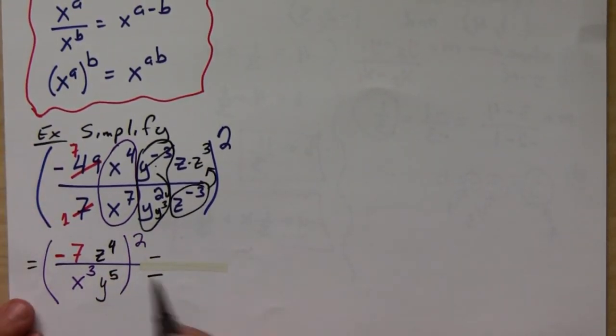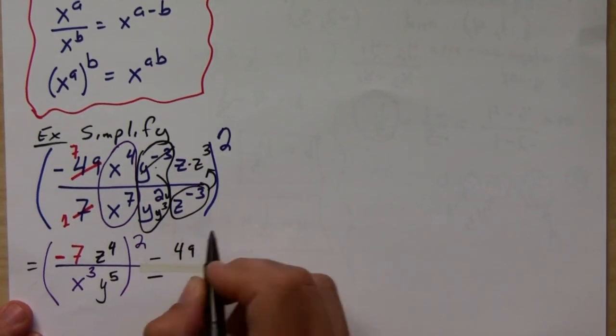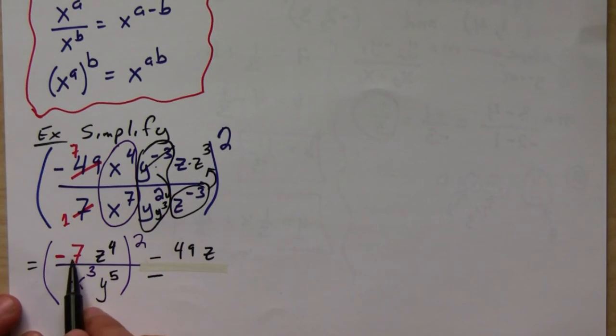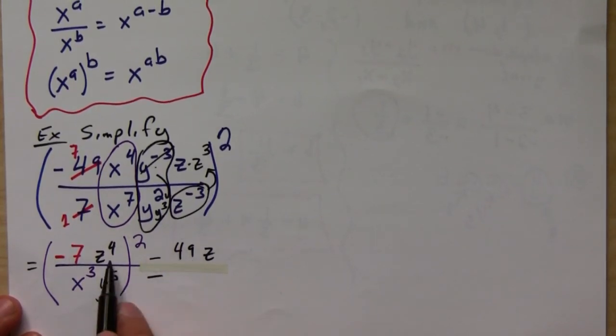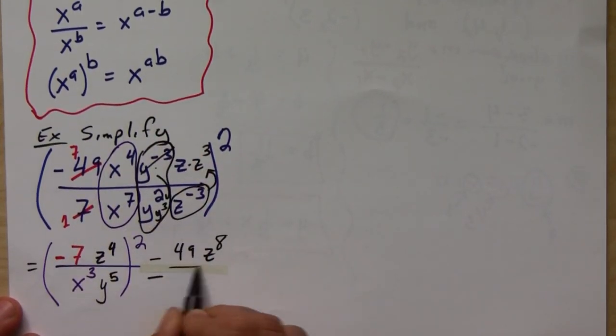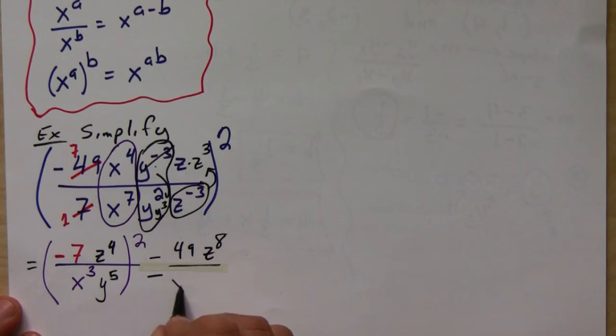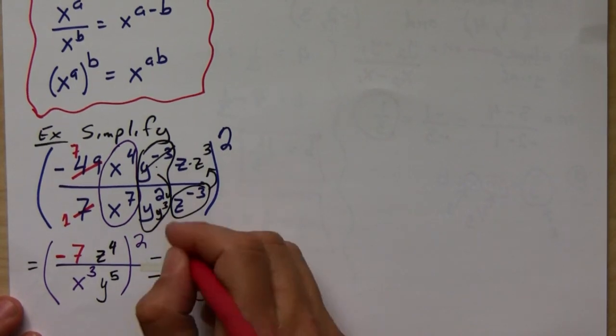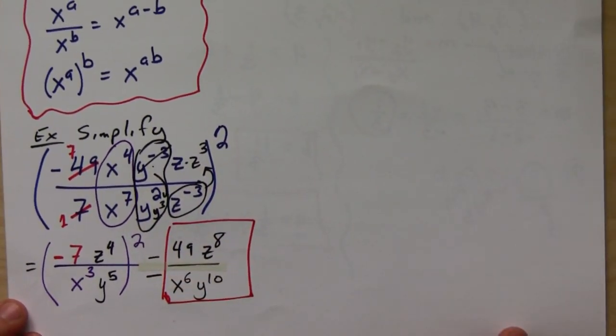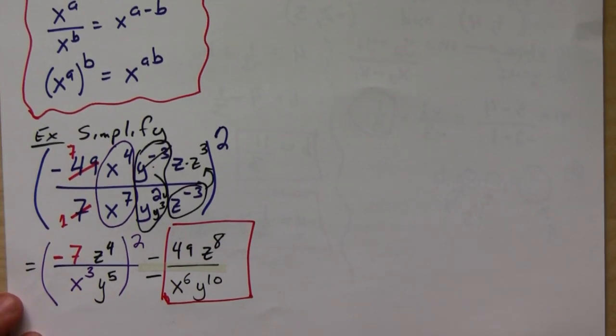So then this is equal to 49 z... so remember when you raise negative seven, we square, we get positive 49. The z to the fourth, remember you multiply the exponent, so we would get z to the eighth over x to the... multiply we get six, y to the tenth. And that's it.